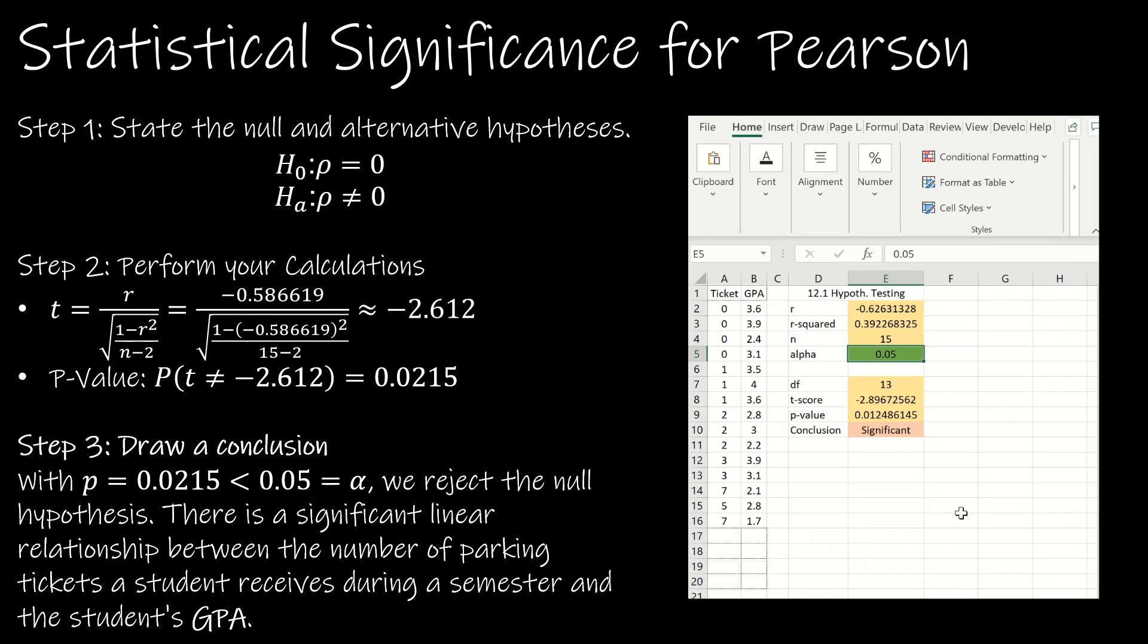I still need to understand what it is that I found though, so now I have to draw my conclusion. My conclusion is that with P less than alpha, we reject the null. There is a significant linear relationship between the number of parking tickets a student receives during a semester and that student's GPA.